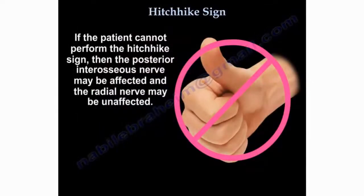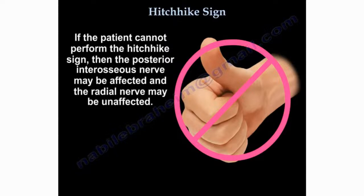The HHIK sign means the person cannot extend their thumb. This occurs with either radial nerve palsy or posterior interosseous nerve palsy. The patient may be fine regarding the radial nerve, but the posterior interosseous nerve may be affected. If only the posterior interosseous nerve is affected, the patient cannot do the HHIK sign or extend the fingers, but will still be able to extend the wrist.